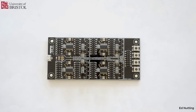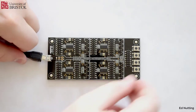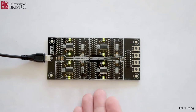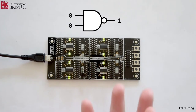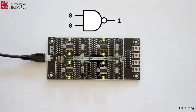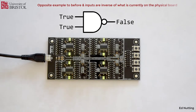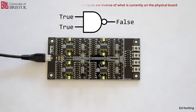We're going to demonstrate some of this now. To start with, we plug in the USB. When we plug it in and nothing's wired up, all the LEDs are on — and this is what we'd expect, because zero NAND zero is a one, so false NAND false is true. The reason for this is that NAND means not AND. An AND gate says if one thing is true and the other is true, then the result is true; not AND is the inverse, so if both inputs are true, the result of NAND is false.